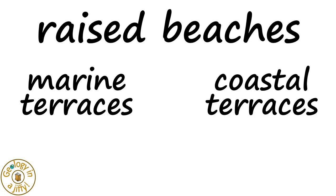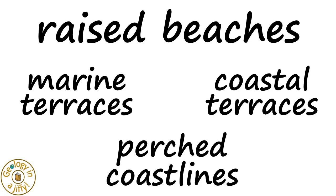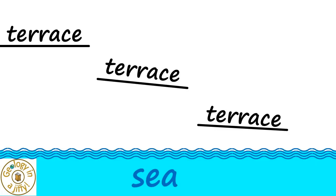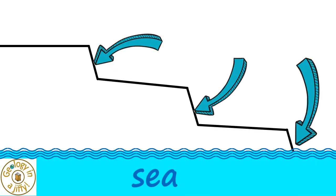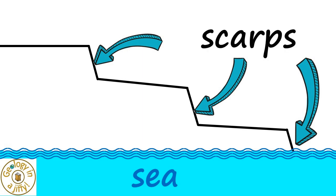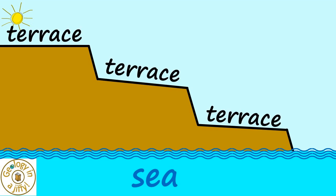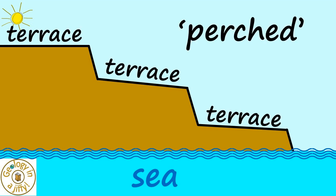Raised beaches are also known as marine terraces, coastal terraces, or perched coastlines. Looking at these terms, terraces appear as horizontal or sub-horizontal plateaus found next to the sea, with the areas joining them called scarps. With rock added below, this gives a profile where the terraces are clearly perched above sea level.